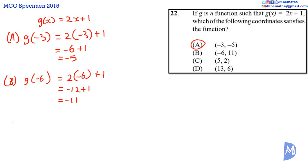What about C? g(5) = 2(5) + 1. 2 times 5 equals 10. 10 plus 1 equals 11. 11 is not the same as 2.